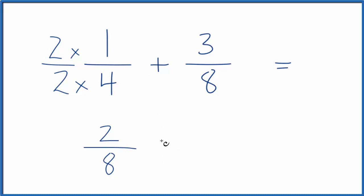We can add 2/8 plus 3/8, and 2 plus 3 is 5. We bring the 8 across. 5/8.